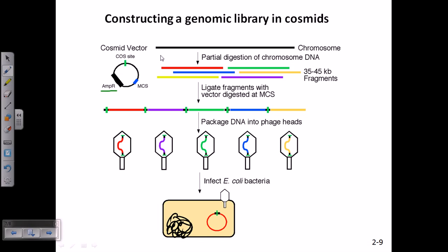Then, what we will do? Again, they are having cos sites. So that means they are again producing concatemers with different regions of our interest and very small segments of the region.